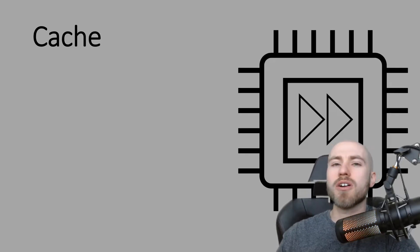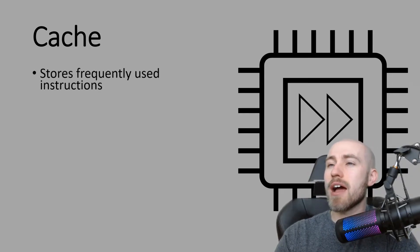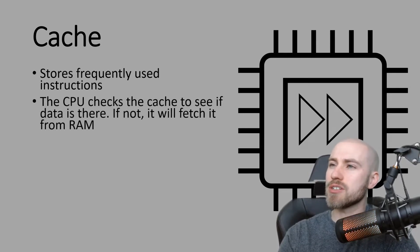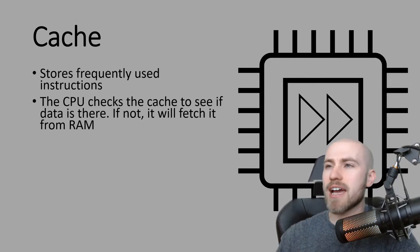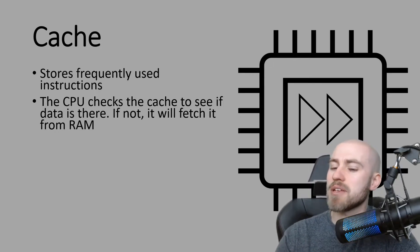And finally we've got cache. Now we have mentioned cache in a previous video, and the main definition that we understood last time was that it stores frequently used instructions. So when the FDE cycle is being carried out, the CPU will actually check cache to see if the data is there first. Now if it's not in cache, then it'll go to RAM to fetch it.